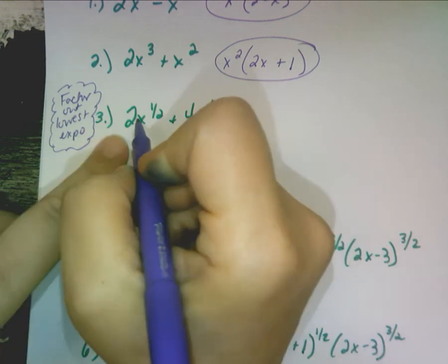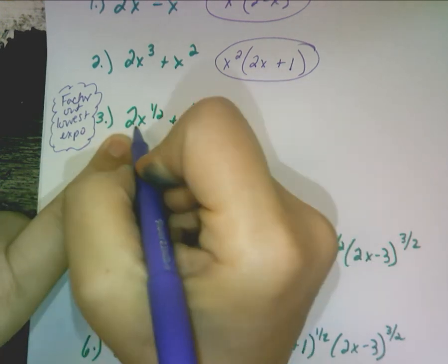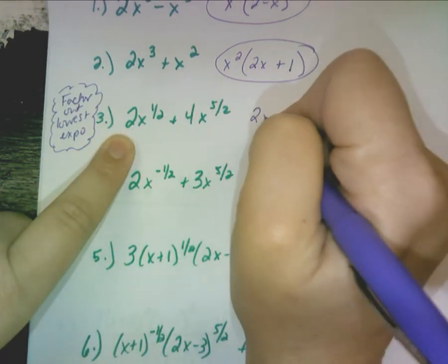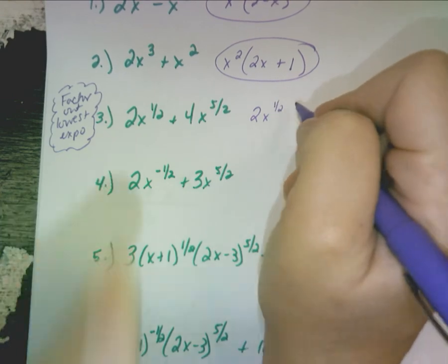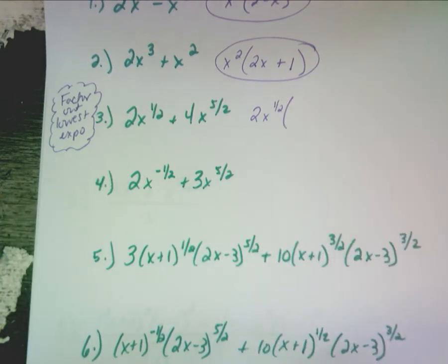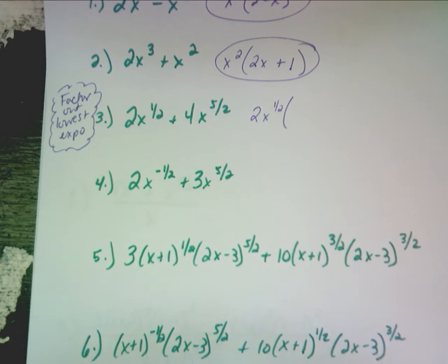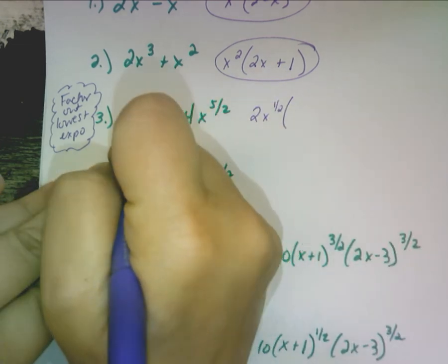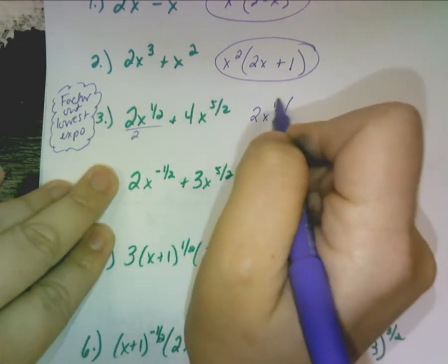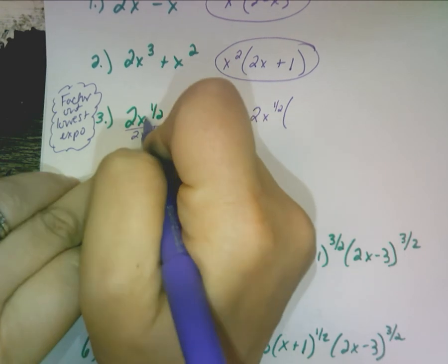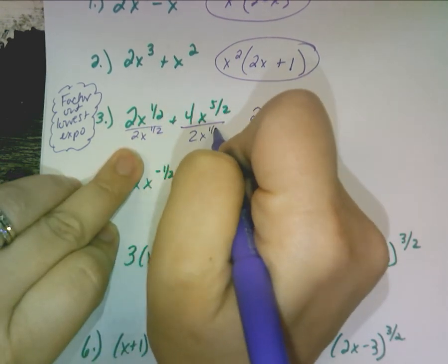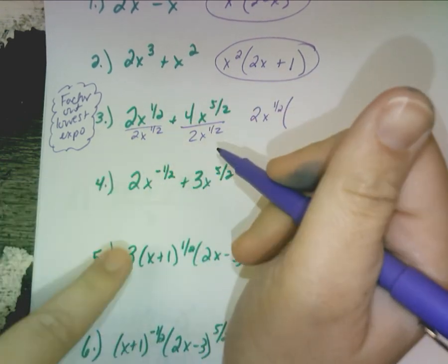So we're going to factor out — first of all, I could factor out a 2, wouldn't you agree? And an x to the one half. When you factor, you're actually dividing. Did you know that? You're dividing. And what do you do when you divide exponents? You subtract. So let me write it like this just to show you — you're taking what's in front and you're dividing this monomial by this monomial. You will not have to do this after a while, but I just wanted to show you.